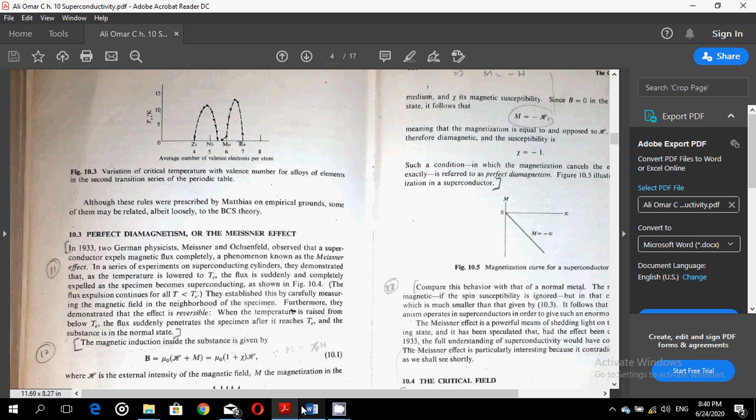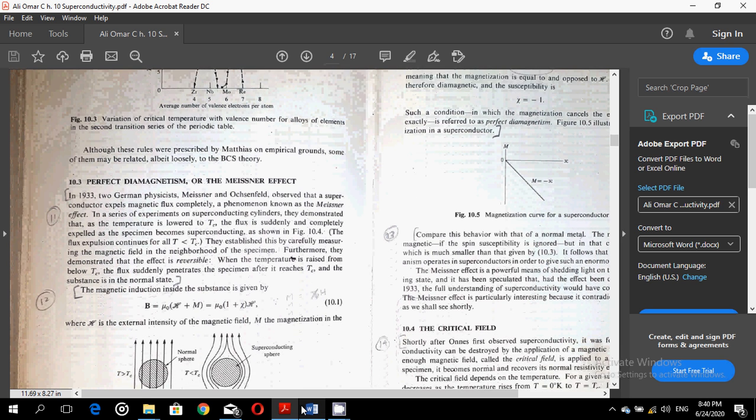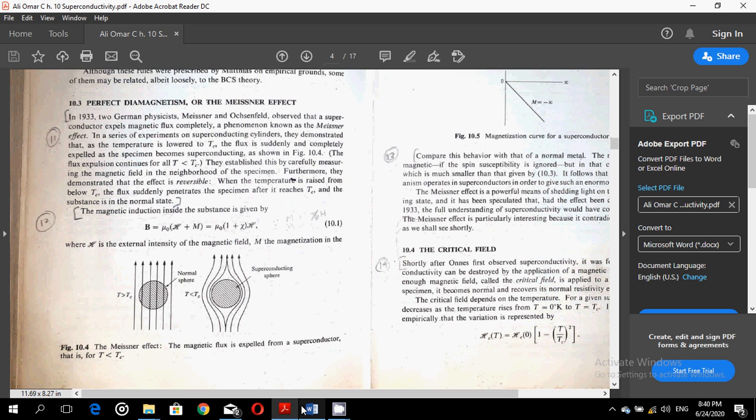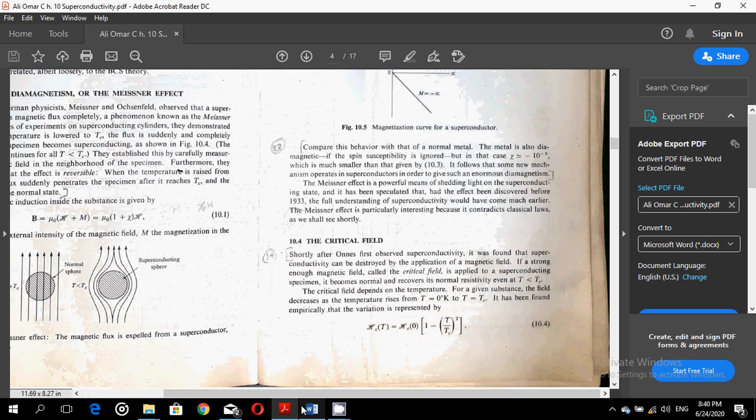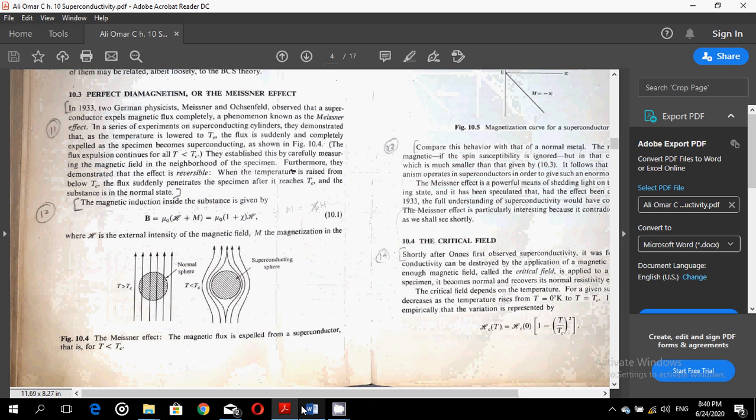The magnetic induction inside the substance is given by equation 10.1, where H is the external intensity of the magnetic field, M is the magnetization. In this figure, you can see the expulsion of the magnetic flux as the solid goes to the superconducting phase.